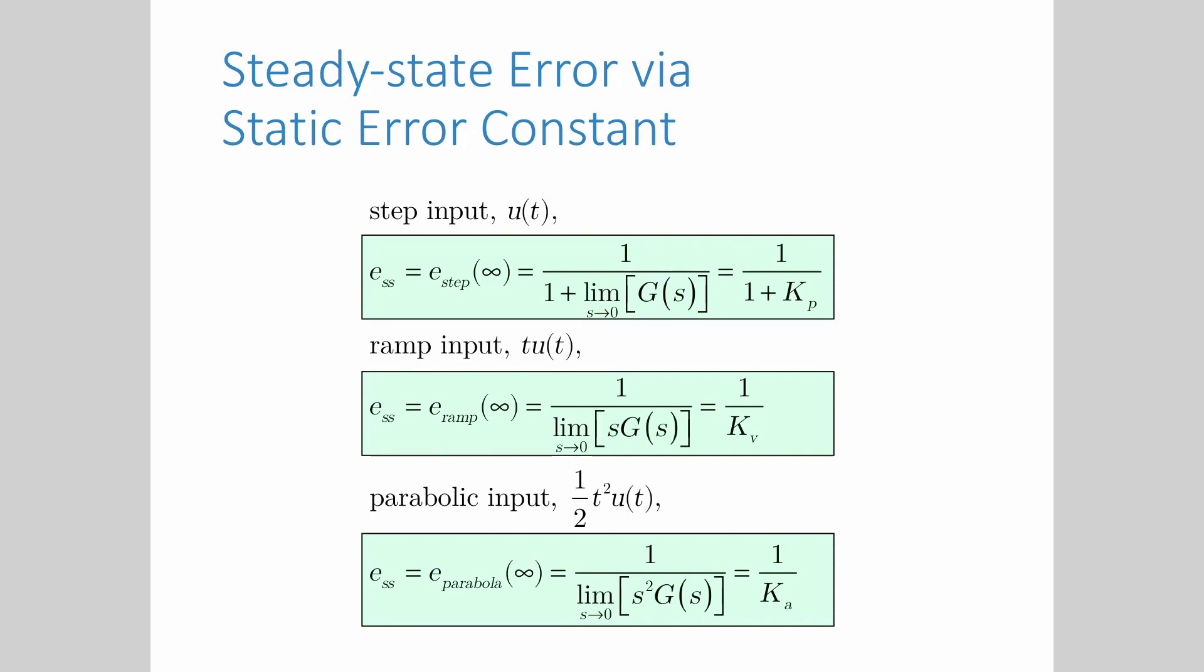In the previous lecture we evaluated the steady state error by using the final value theorem, but as an alternative method we can make use of the static error constants to determine the steady state error.